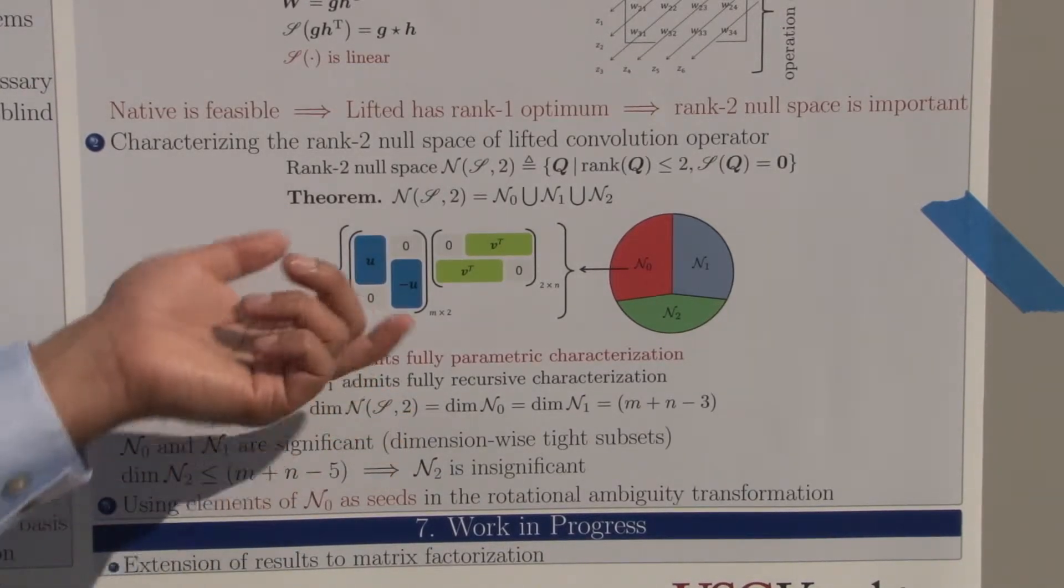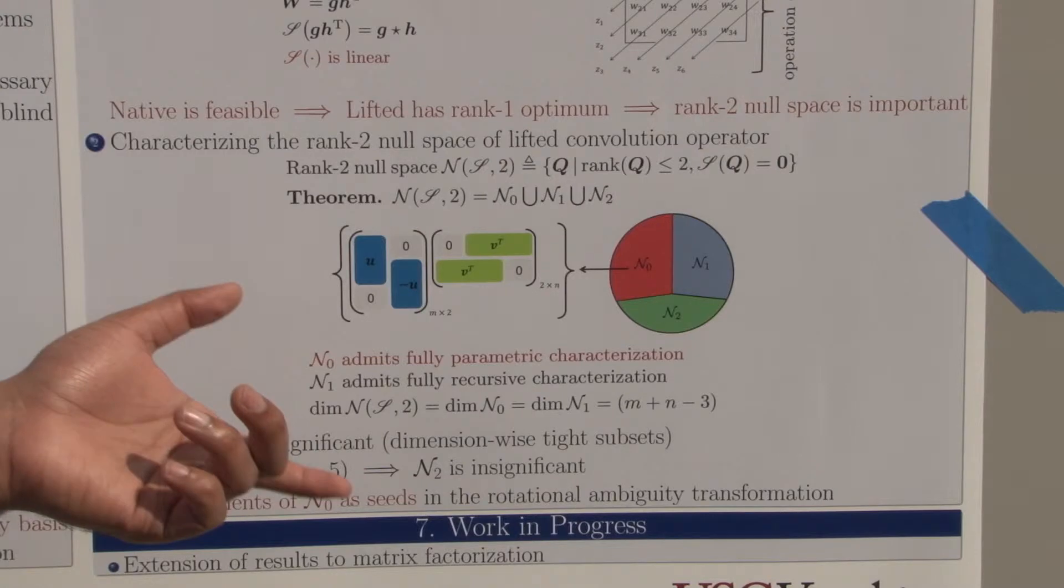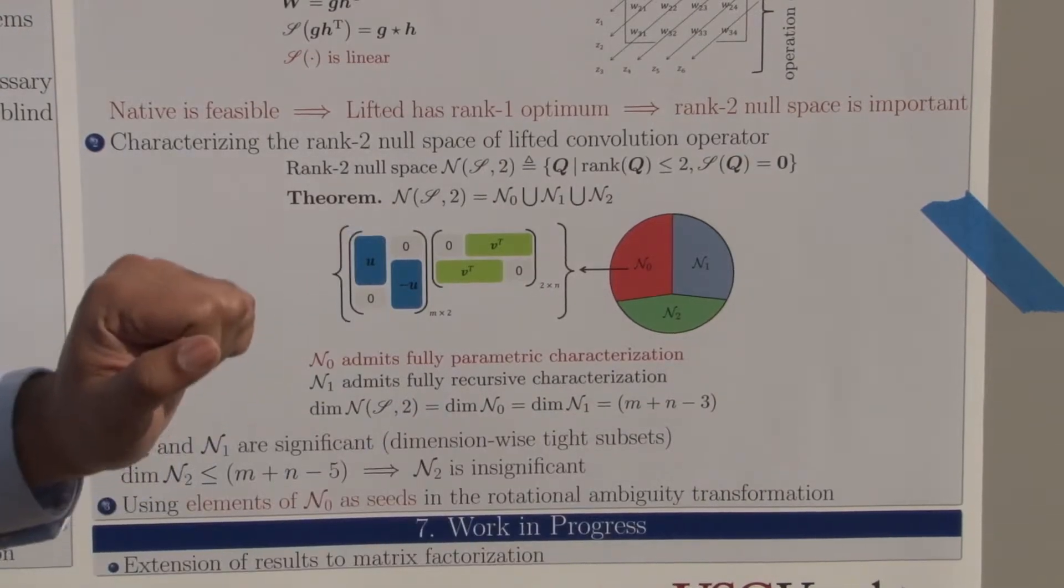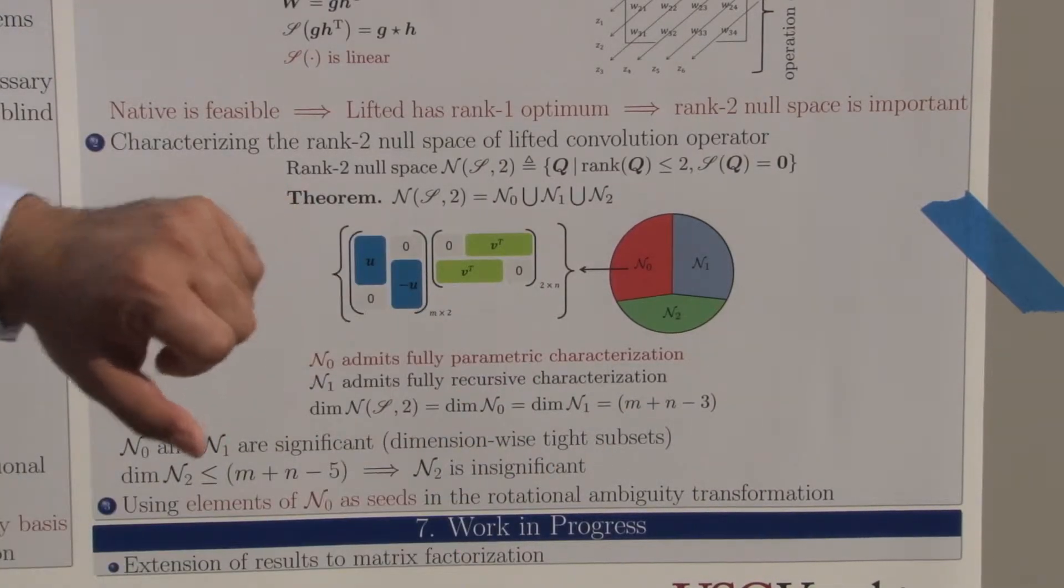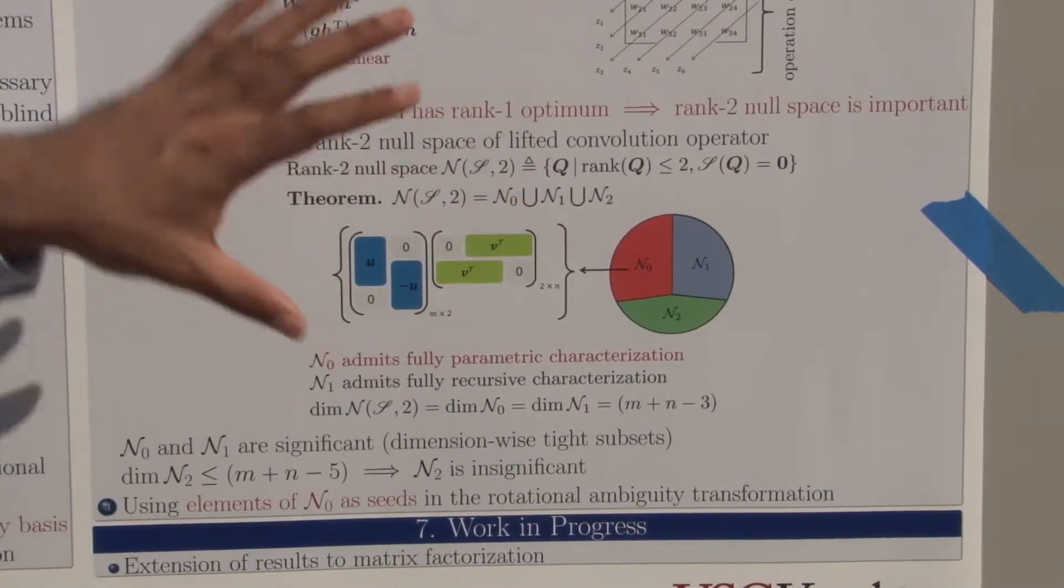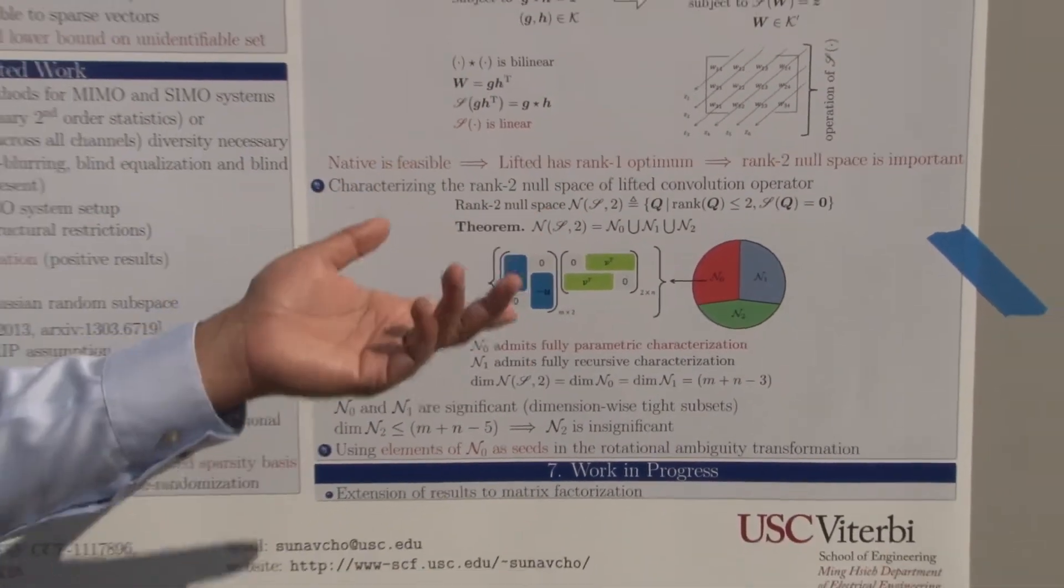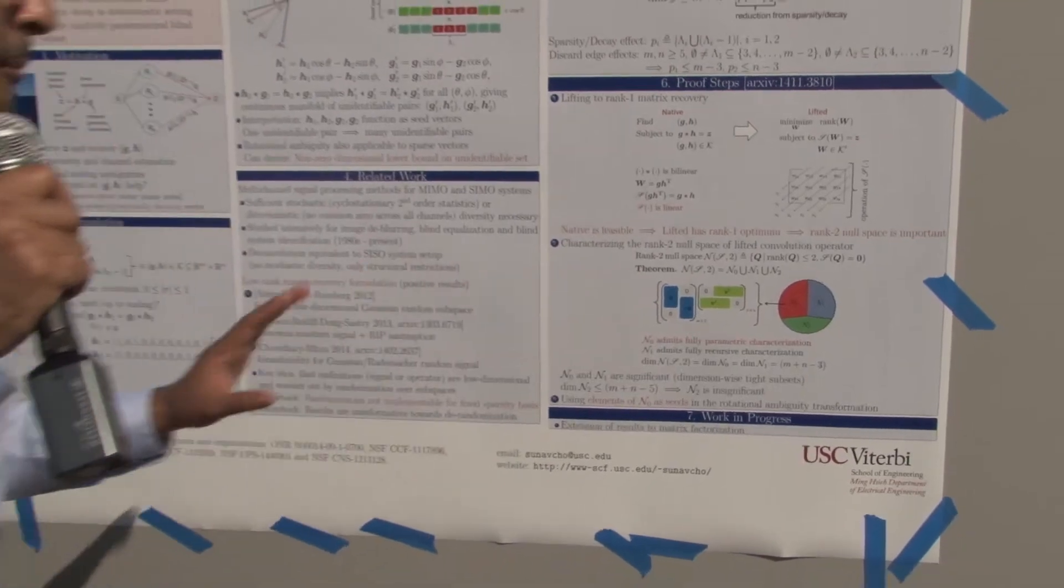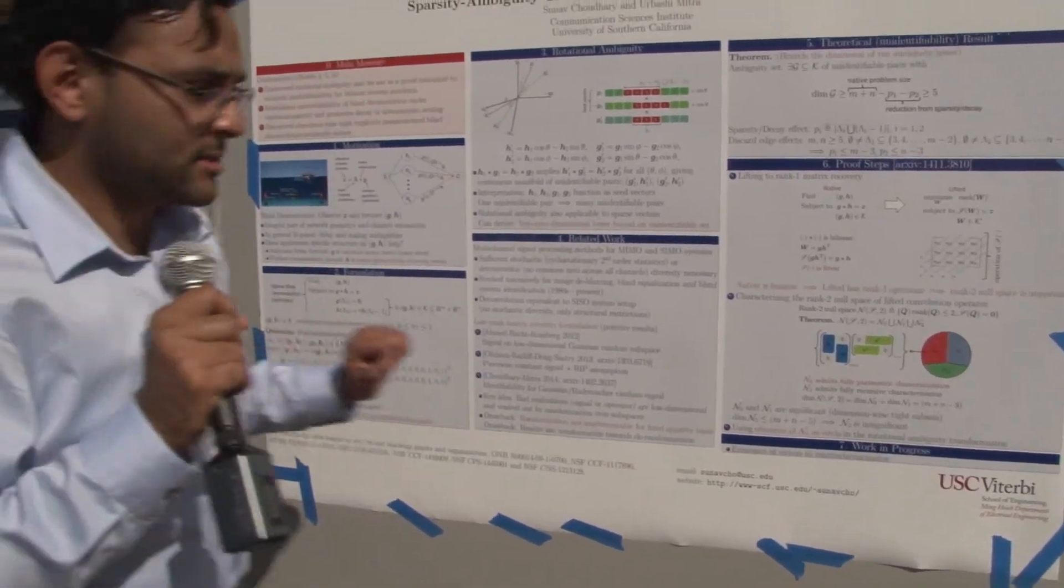This is a dimension-wise parameterization because you get M plus N minus three degrees of freedom here. This is the characterization of the unconstrained ambiguity space—the ambiguity space when you don't have any sparsity constraints.